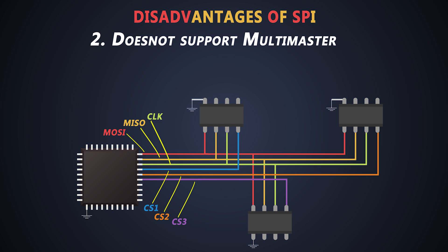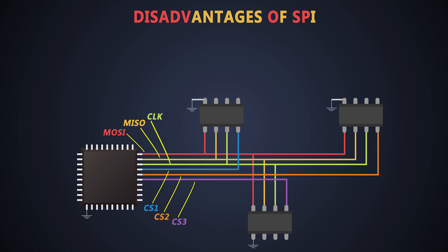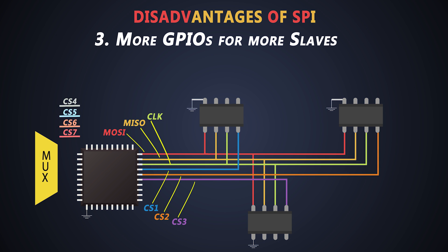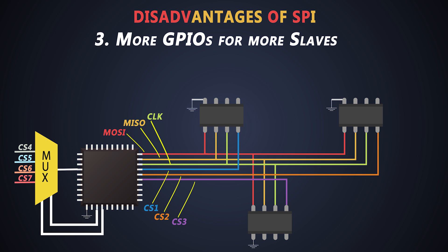SPI doesn't support multi-master configuration. When we want to interface multiple slaves, we need more chip select lines, which consume more GPIO pins of the master device. To overcome this, we can use a multi-slave MUX device that makes use of an address-based multiplexer, which selects one output of multiple slaves and enables the chip select line connected to that slave.